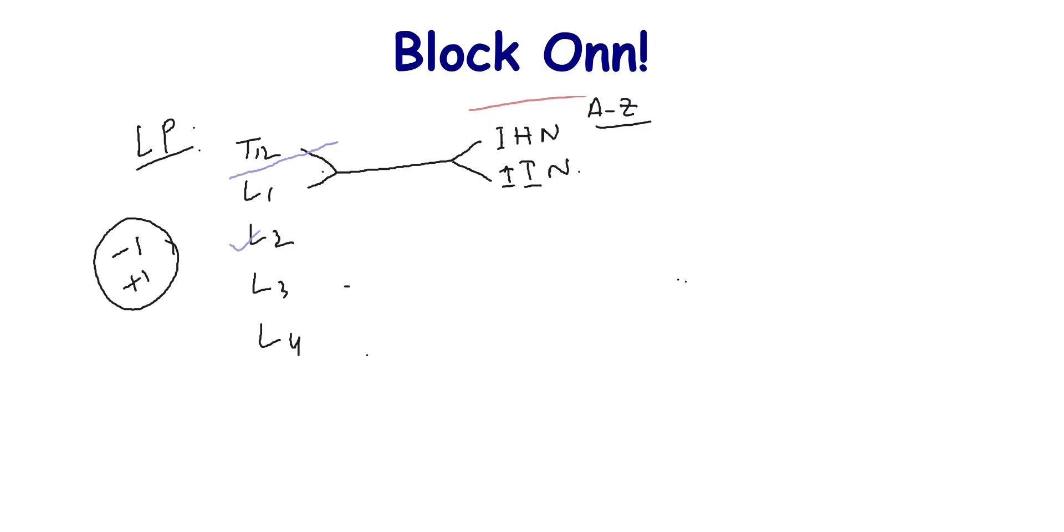Remember in lumbar plexus, nerves have two roots. Minus one will remove one root and plus one will add another root. So L1, L2 forms the genitofemoral nerve: one is genital branch, another is femoral branch.